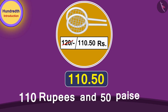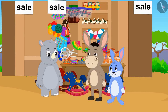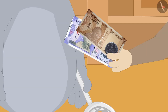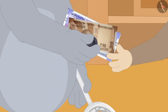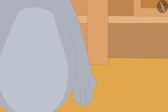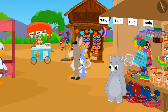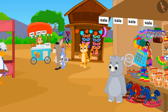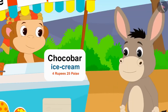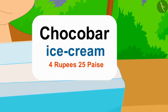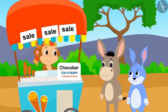Bunny explained to Bhoala. Bhoala quickly understood. Bhoala bought the badminton racket by giving 110 rupees and 50 paise to Gaggoo. Now, both of them have come to eat ice cream at Babban's ice cream stall. Chocobar ice cream is being sold at a heavy discount at Babban's stall.